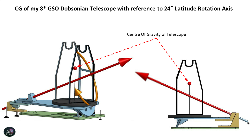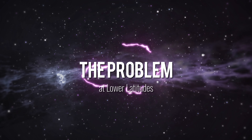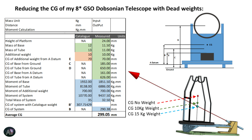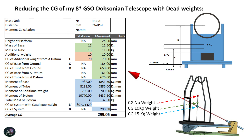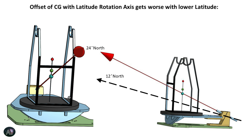That brings me to my first problem: designing this equatorial platform for 24° North latitude and then using it at an even lower 12° North latitude. A solution is to lower the center of gravity by adding weight. However, in my case the center of gravity was way above and I had to use almost 30 to 35 kg of dead weight to lower it for the 12° axis, which is absolutely insane.